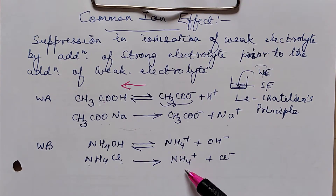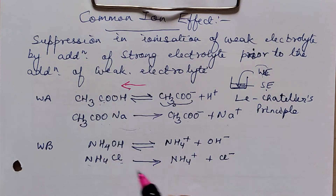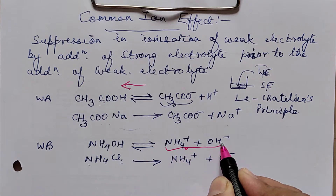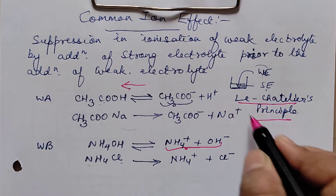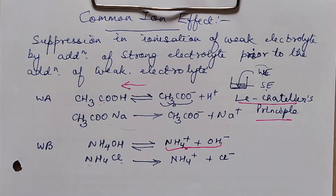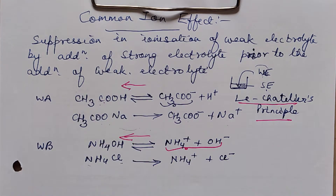Ammonium chloride is a strong electrolyte that has already released NH₄⁺. Although ammonium hydroxide's ionization was already limited because it is a weak base, the presence of the common ion NH₄⁺ further increases the product concentration. As per Le Chatelier's principle, the equilibrium shifts in the backward direction, suppressing the ionization of ammonium hydroxide even further.